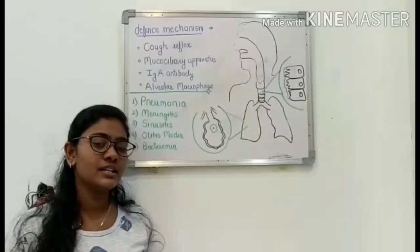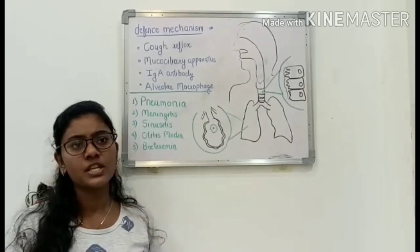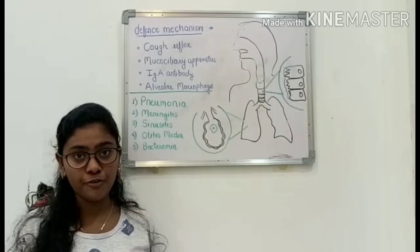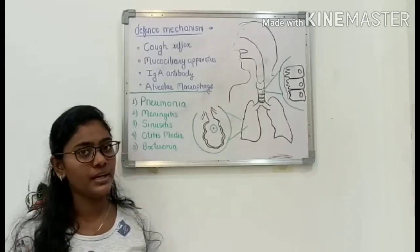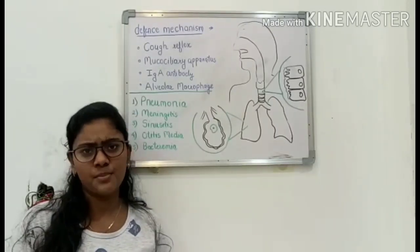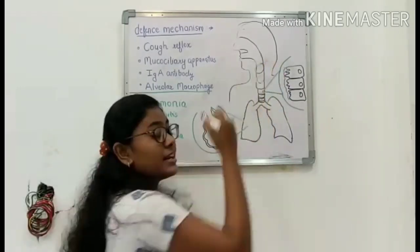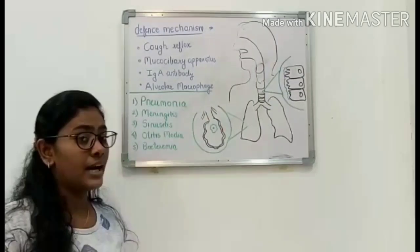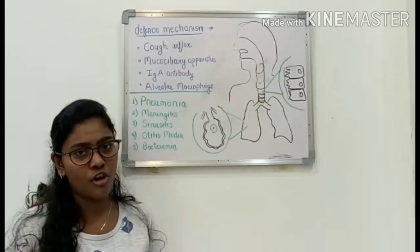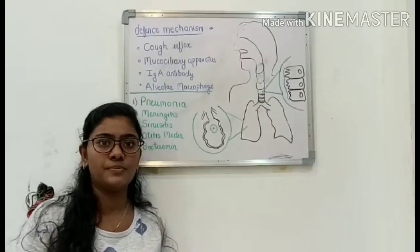Now we will discuss about the infections caused by this bacteria. This bacteria enters our body through inhalation of contaminated dust or droplets. Once it enters our body, it tries to colonize in the nasopharynx part of the respiratory tract, but due to the body's defense mechanisms, it fails to colonize and cause infection.